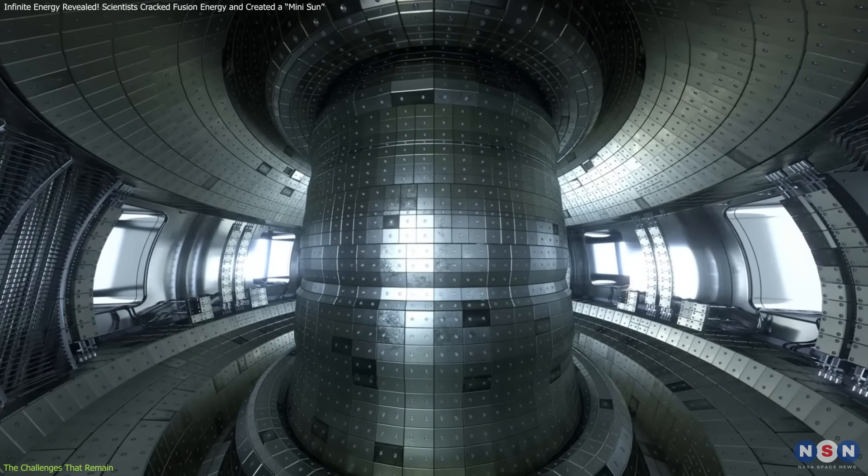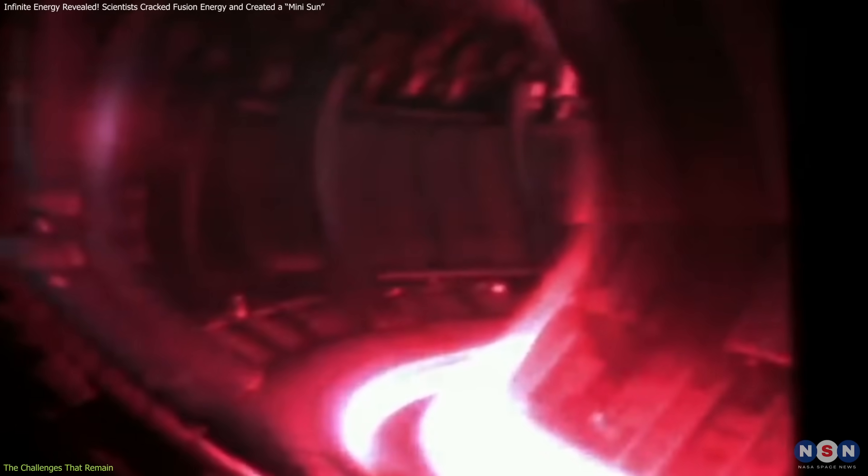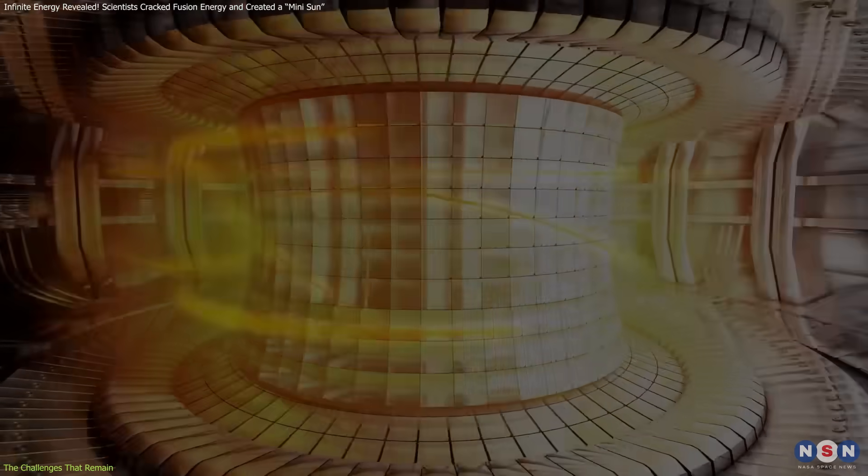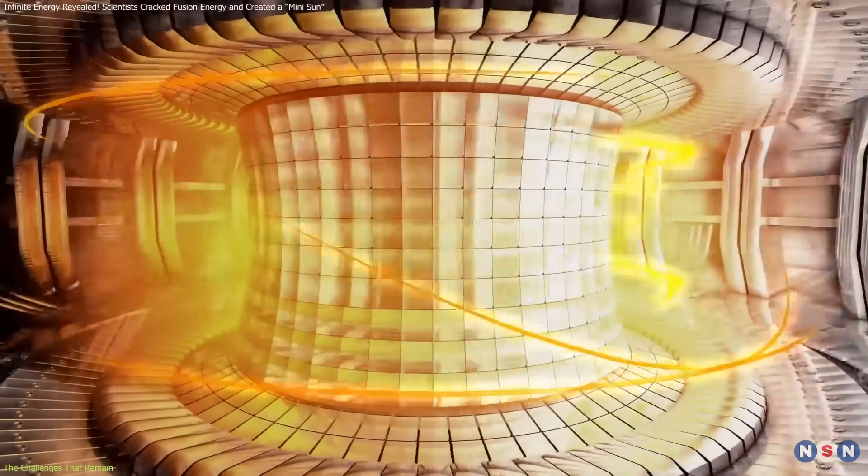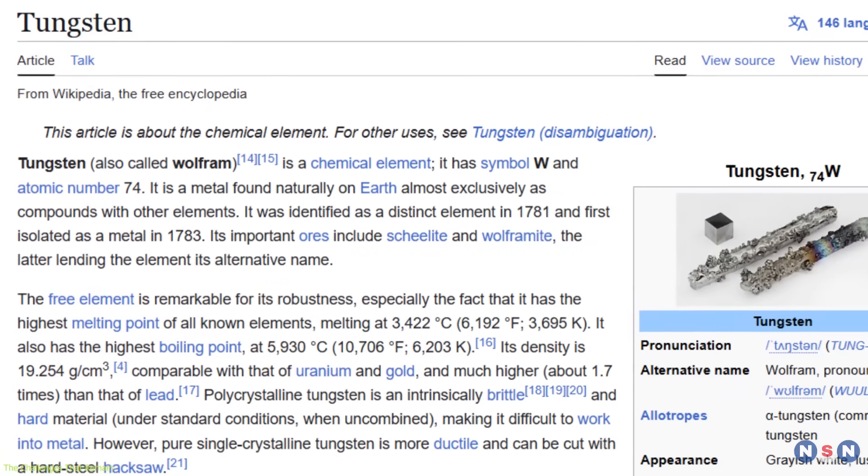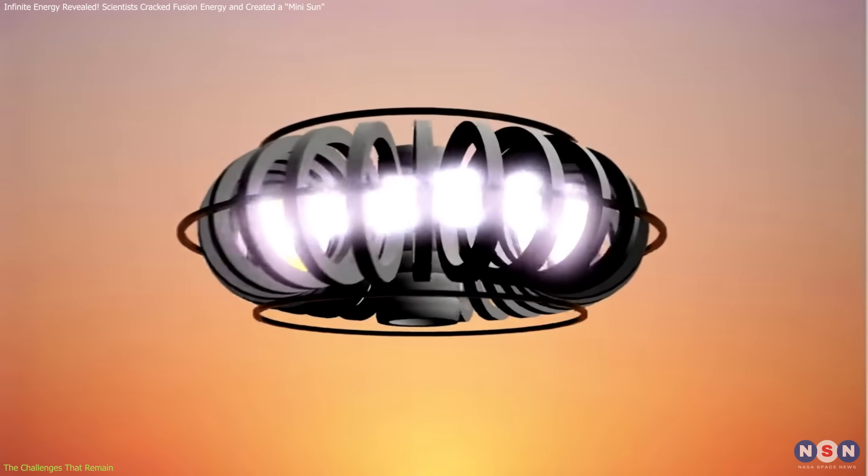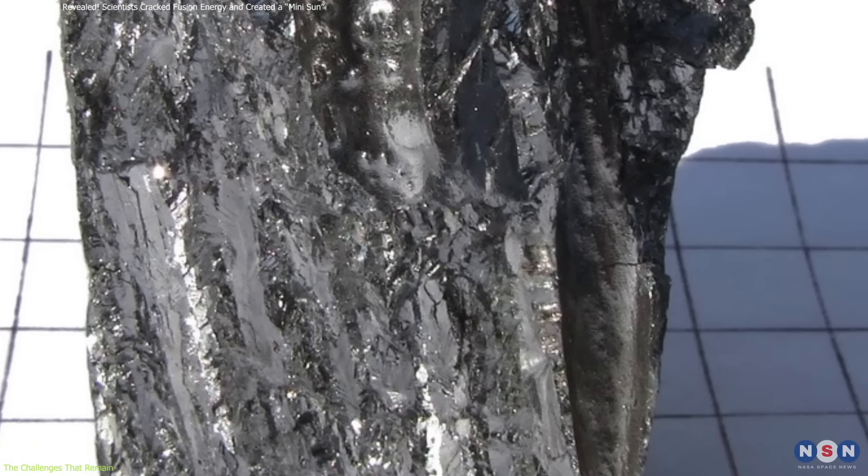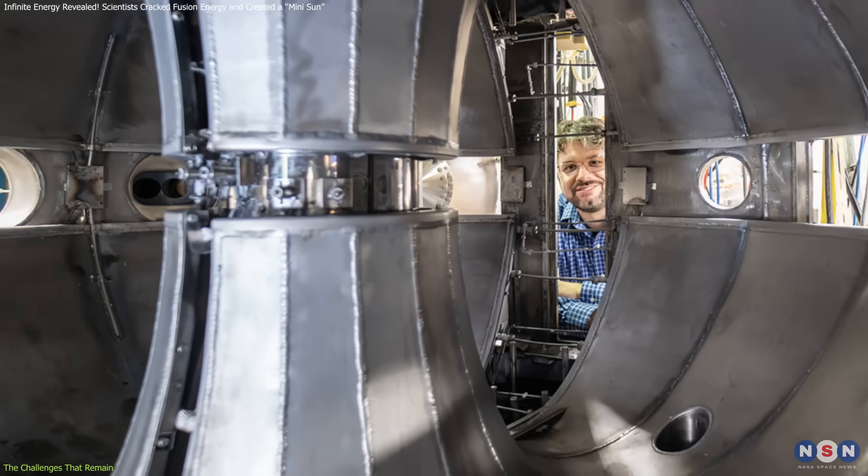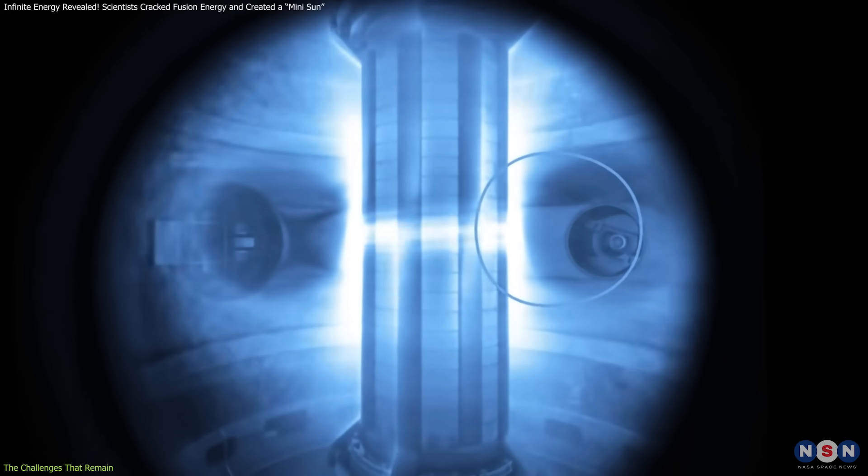This means that future fusion reactors must integrate lithium walls to breed their own fuel. Another challenge is finding the right materials to withstand the extreme environment inside a fusion reactor. Plasma-facing walls must handle intense heat and radiation. Tungsten is currently the top choice because of its high melting point and durability, but it pollutes the plasma, reducing efficiency. Scientists are now testing beryllium, boron coatings, and liquid lithium walls, which could improve reactor longevity and performance.